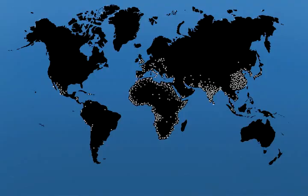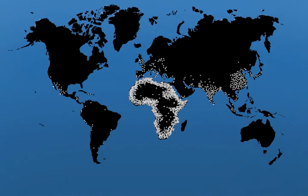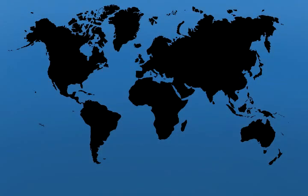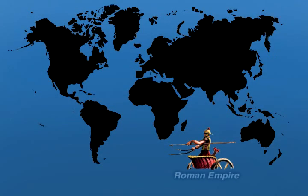As some areas become super-populated, dots will spread outward in order to show the total population within the map. Historical references will be provided by images and text on the lower right.